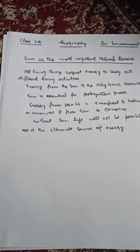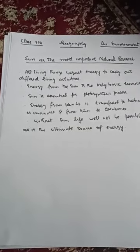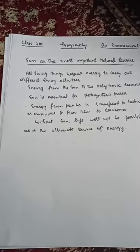The green plants absorb this solar energy and fix it in the form of food material manufactured by photosynthesis. Therefore, these plants are called autotrophs, because they prepare their own food in the presence of sunlight.